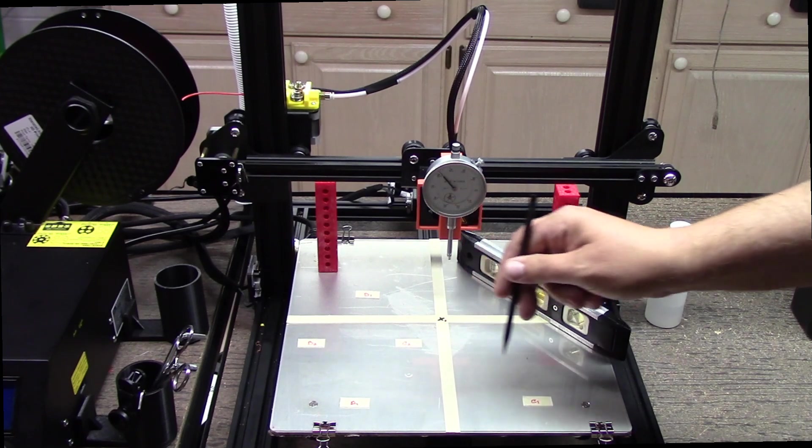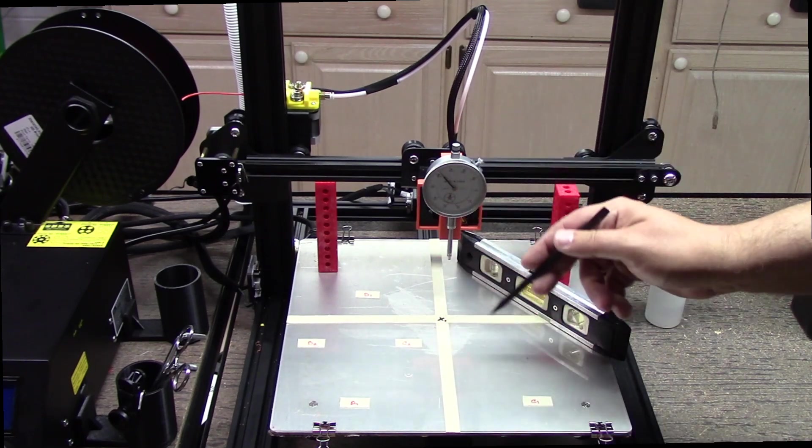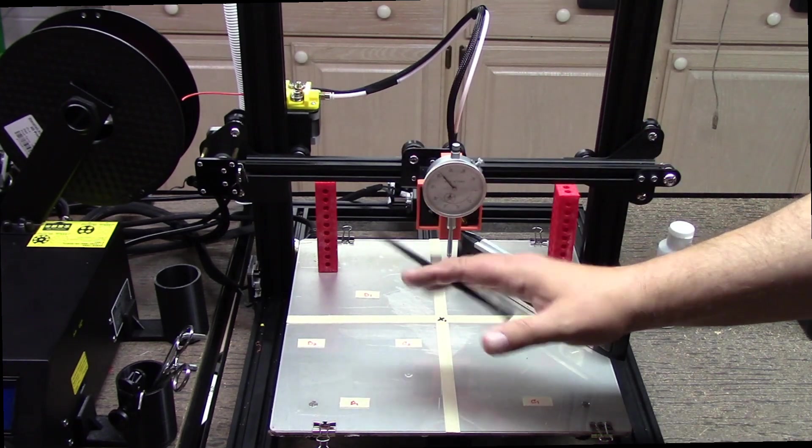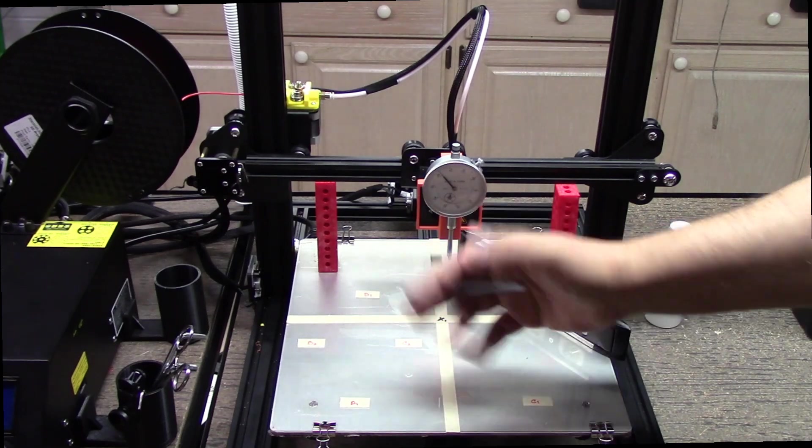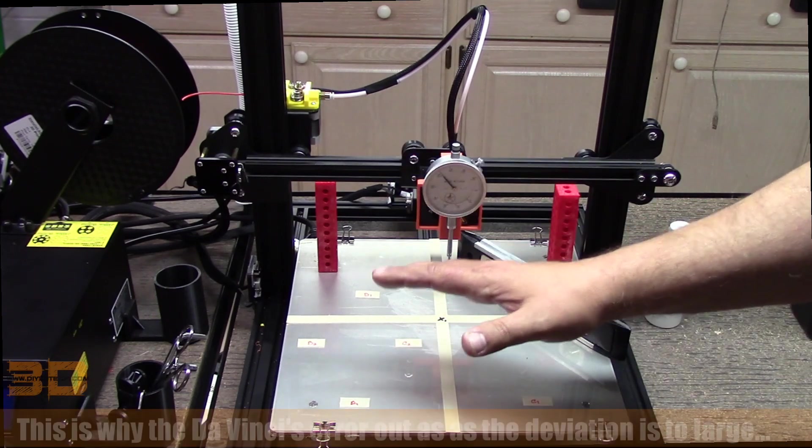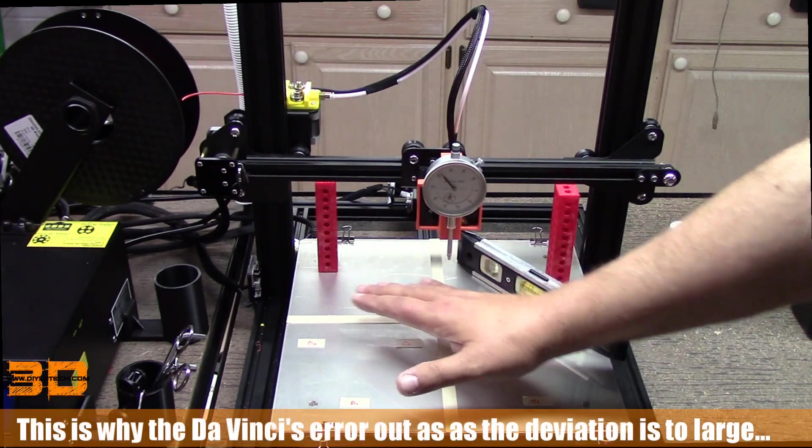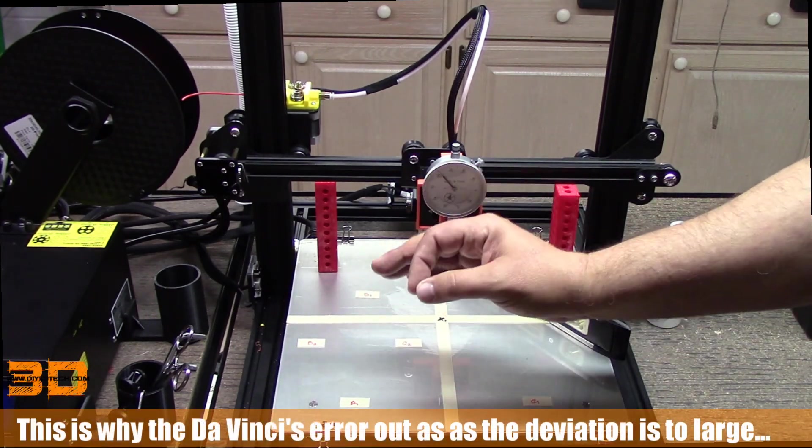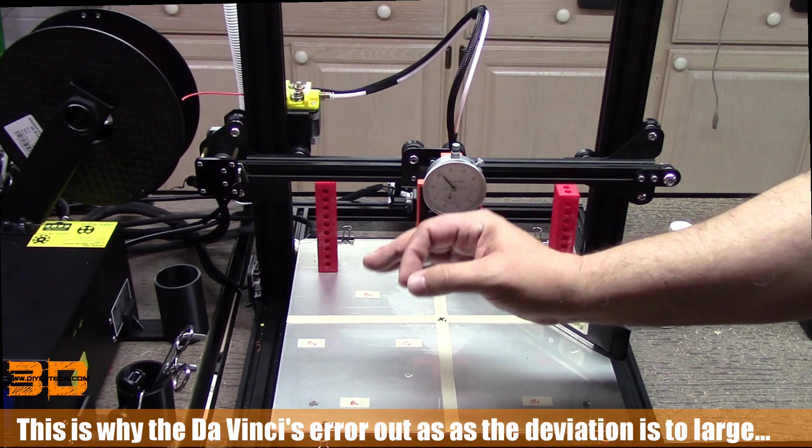What happens is, because we're measuring from the tool head as a reference point to this surface, it's taking the difference. In my DaVinci's it takes three points - point A, B, and C. All that is good for though is determining the error in the slope.